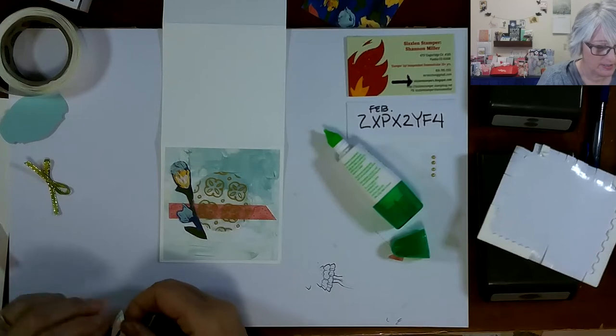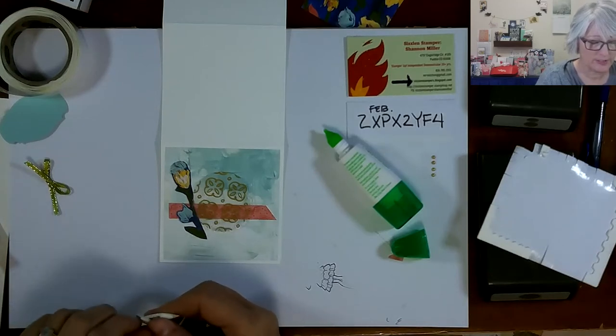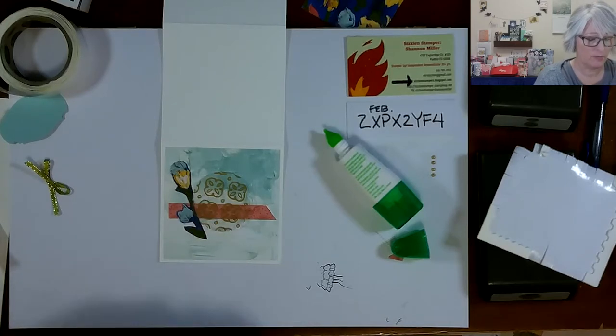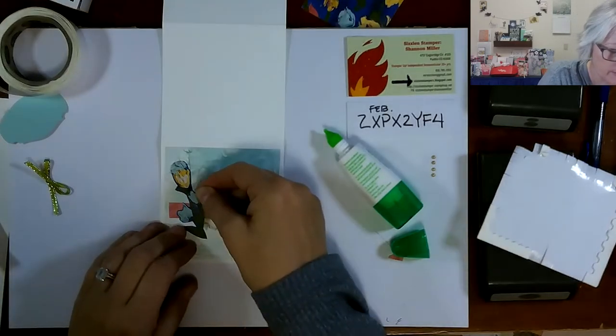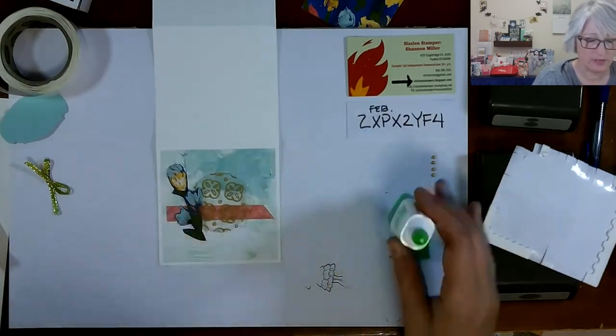Peel those backs off again. If you don't have extra dimensionals at home, you can just lay it flat. It won't matter. It'll still look really cool. And then I'm just going to bring that one right on top of my acetate circle a little bit like so.